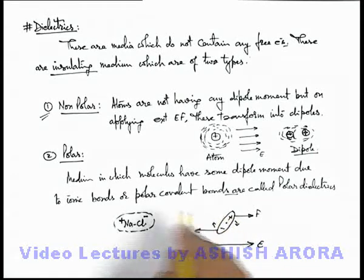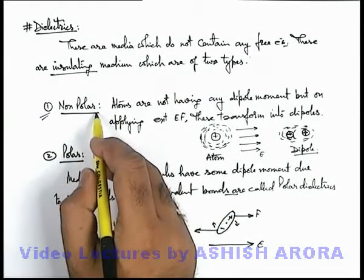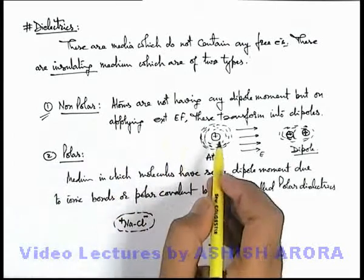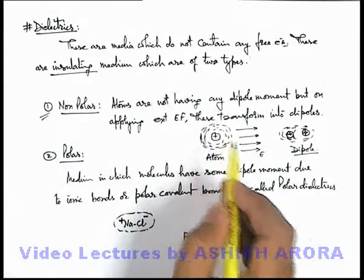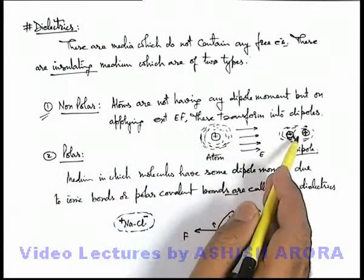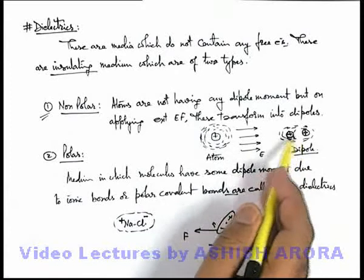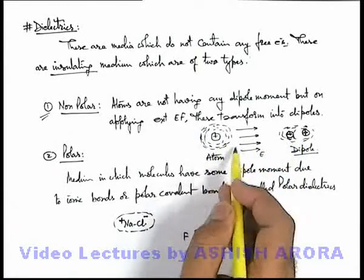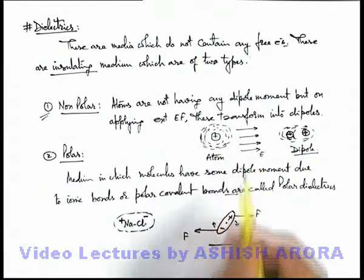This is the behavior of a polar dielectric. In the case of a non-polar dielectric, earlier there were no dipoles; on application of an electric field, dipoles are developed, which are already aligned in the direction of the electric field.